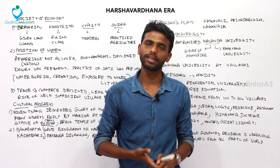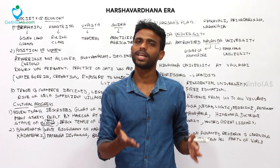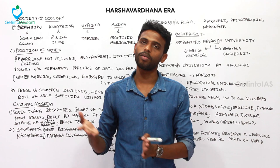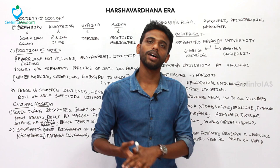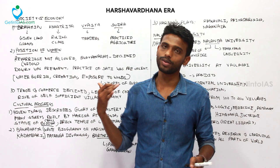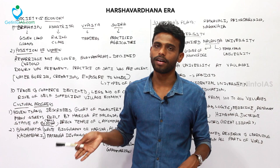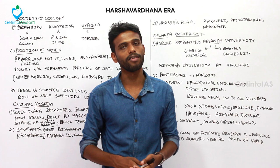The Harsha empire eventually started to decline. This was the last major empire of ancient North India. Meanwhile in the South, the Cholas, Pandyas, Chalukyas, Rashtrakutas, and Pallavas were active — and those dynasties will be covered in upcoming classes. In the North, after the Harsha dynasty, India moved into the medieval period. Thank you — please subscribe to our channel for further updates.